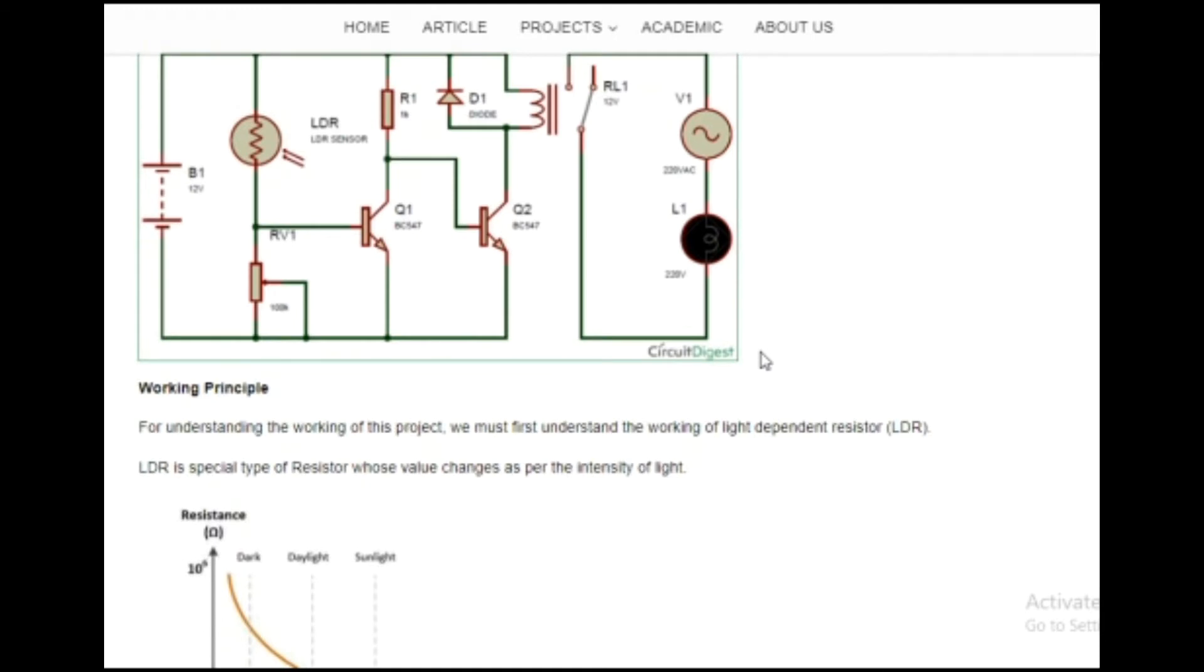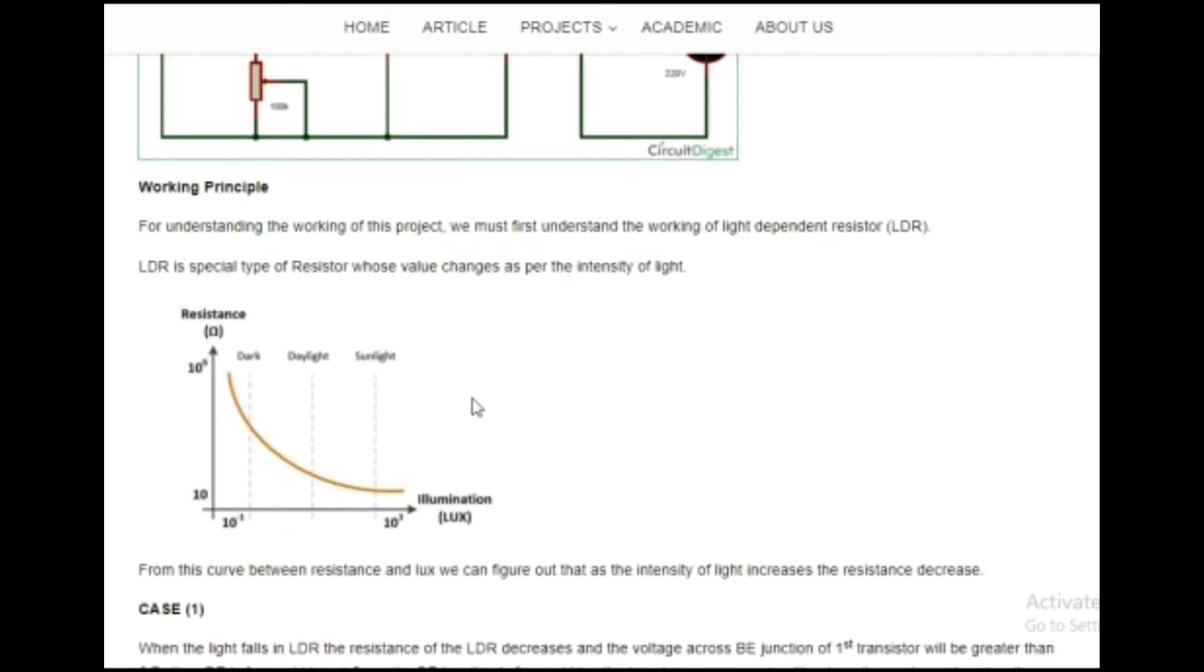LDR is a special type of resistor whose value changes as per the intensity of light falling on it. This is the curve showing the characteristic of LDR. This curve is plotted between the resistance and illumination. During the dark time, the resistance is high and illumination is low, and during the sunlight time, the resistance is low and the illumination is high. This curve shows that the resistance and the intensity of light are inversely proportional.